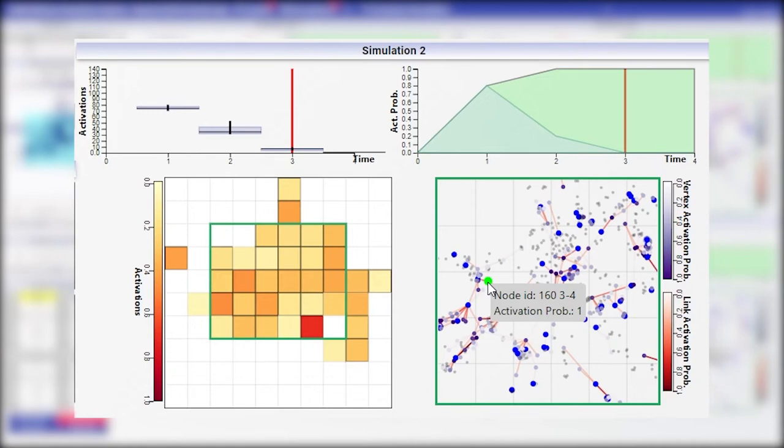The edges covered by the diffusion process appear in a scale from white to red based on their activation probability at the current time step.